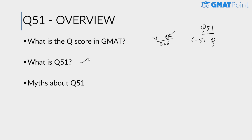You must be thinking that you need to get all questions right to get the highest possible score in the GMAT — but that's not right. You can get some questions wrong and still end up with a Q51 score. No one knows exactly how the GMAT calculates the score, and it is not necessary to solve all questions correctly to achieve Q51.